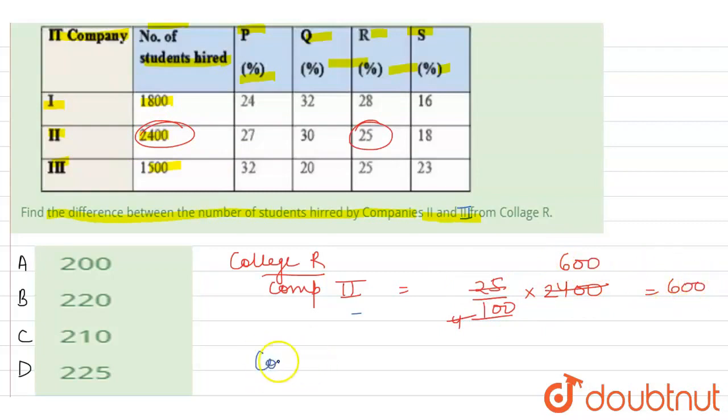Now, for company 3, what is the percentage of R? 25%. But the total is 1500. So 25% of 1500, this is 375.